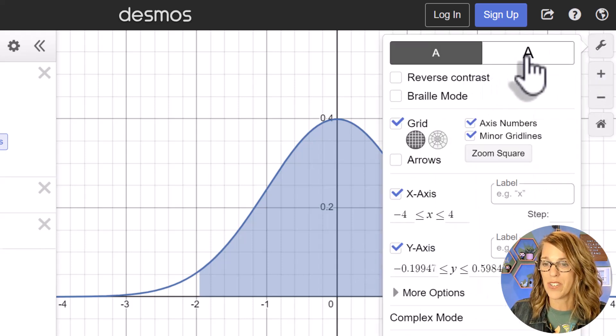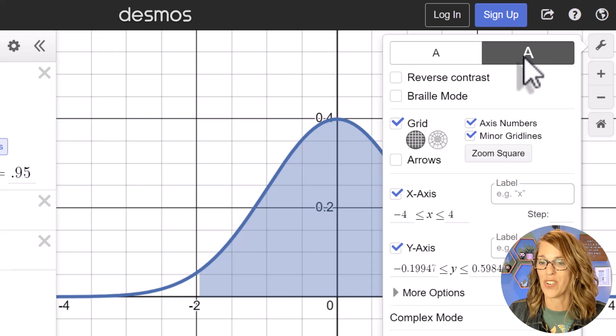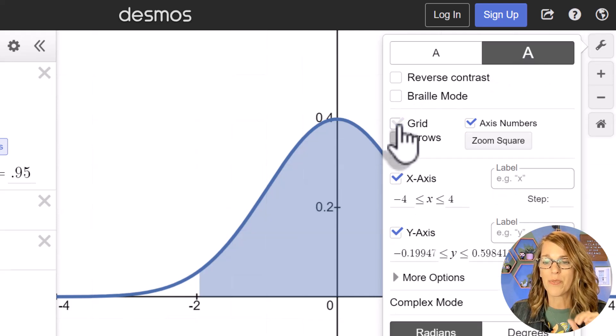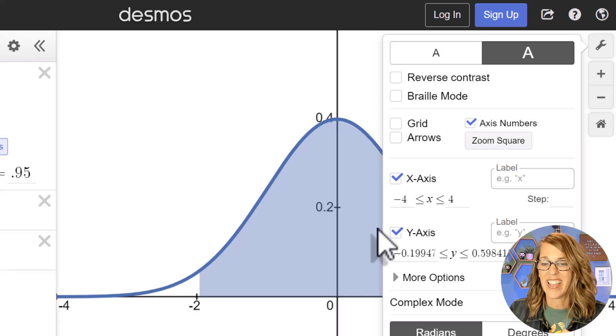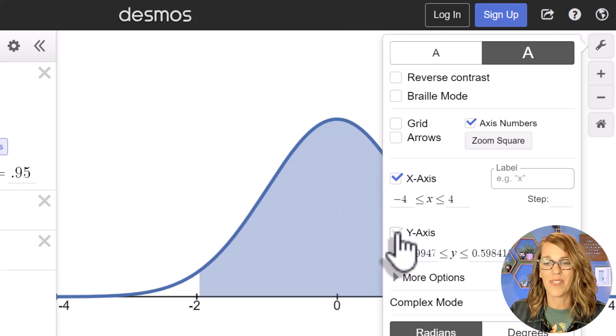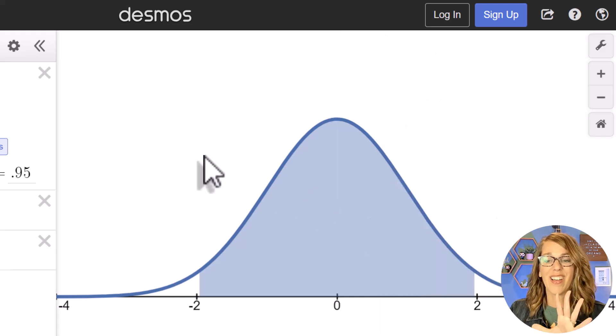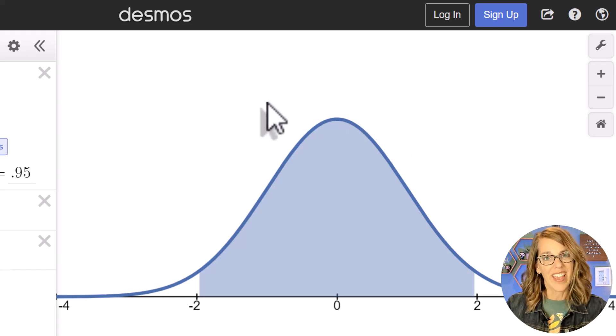So let me go to my graph here and I want to, I'm going to make things darker so it shows up a little bit better. I'm going to get rid of the grid and I'm going to get rid of the y-axis and it looks a lot more like a normal curve.